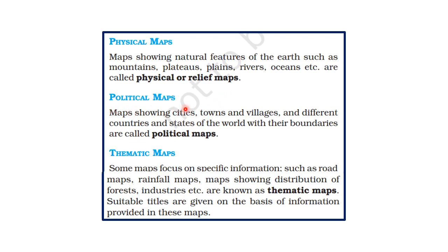Another type is called political maps. These maps show boundaries between countries, cities, towns, and villages. The maps showing political boundaries between countries, states, and cities are called political maps. The third type is called thematic maps, which show the distribution of specific features like distribution of rainfall, forests, agricultural crops, and industries.